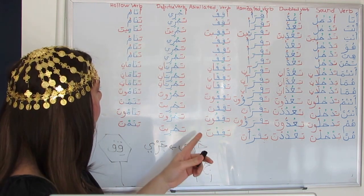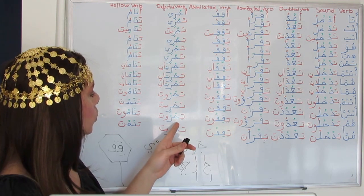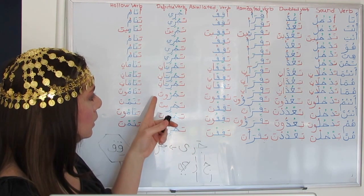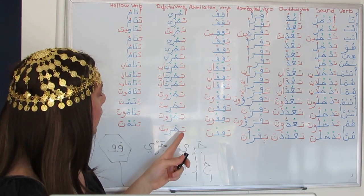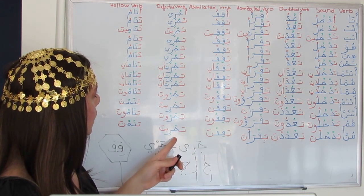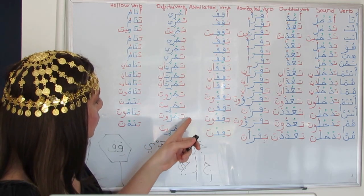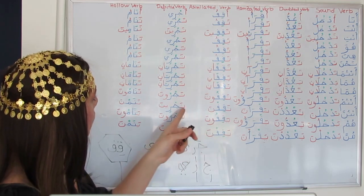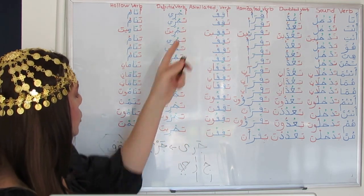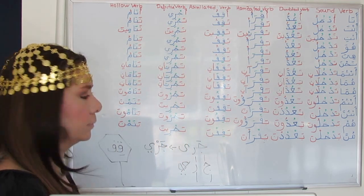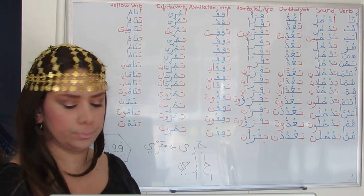Hum yajruona — like antum. Hunna yajriyna. Antunna tajrina and anti tajrina are the same — another repetition in the conjugation table.